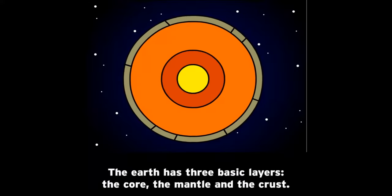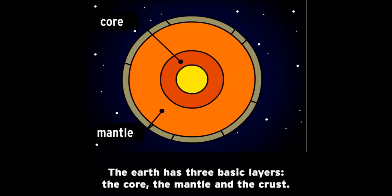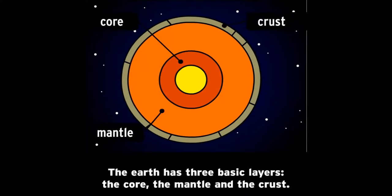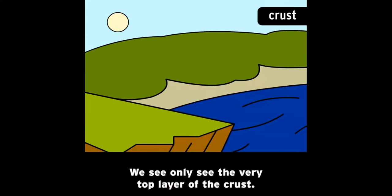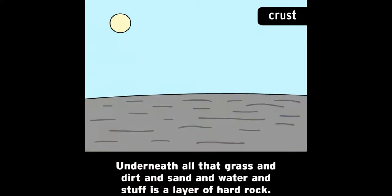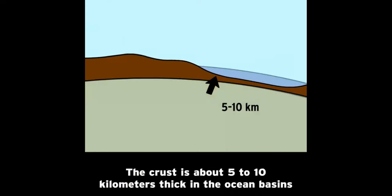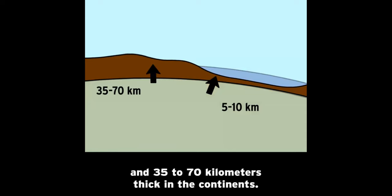The Earth has three basic layers: the core, the mantle, and the crust. The crust is the part of the Earth we live on. We can only see the very top layer of the crust. Underneath all that grass and dirt and sand and water is a layer of hard rock. The crust is about 5 to 10 kilometers thick in the ocean basins and 35 to 70 kilometers thick in the continents.